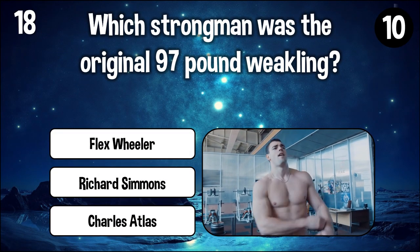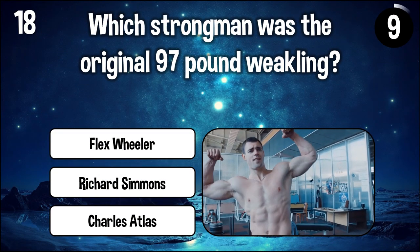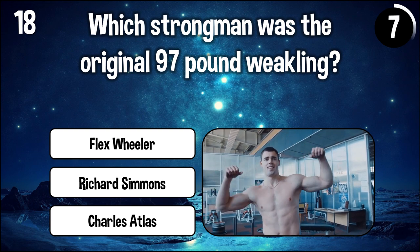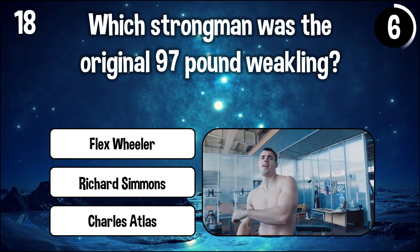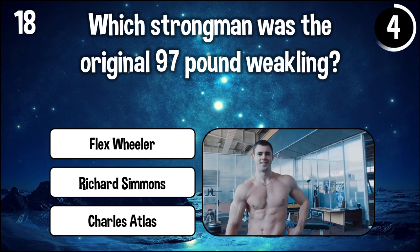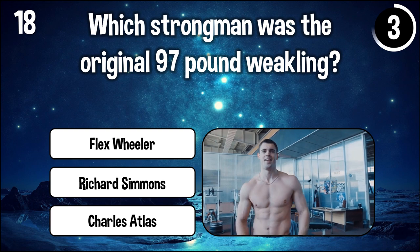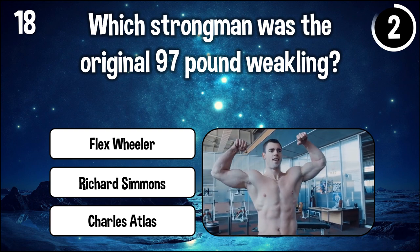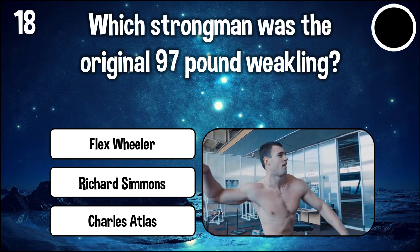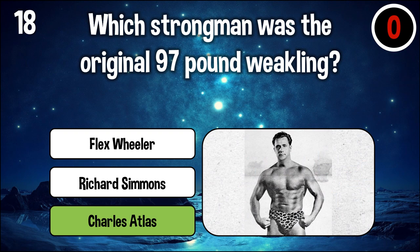Which strongman was the original 97-pound weakling? The answer is Charles Atlas.